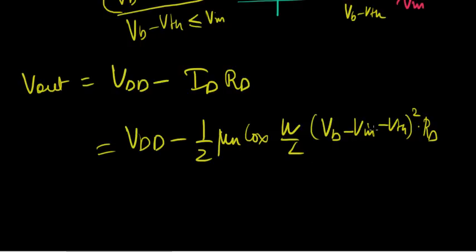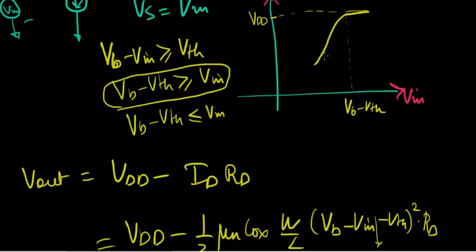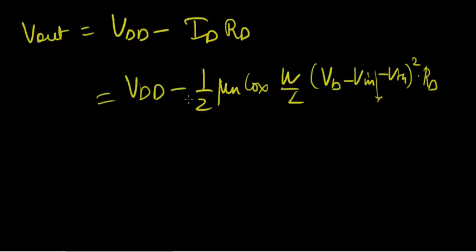Vout is Vdd minus IdRd. Vdd minus half mu n Cox w over L, Vb minus Vin minus Vth, the whole square times Rd. Is it clear how I got there? Vgs minus Vth, the whole square times Rd. Pretty simple, not a big deal. Now look at this. As Vin reduces, it was at a very large value before. As it reduces, this term basically increases. That means Id increases. As Id increases, Vout has to decrease. Considering obviously Vdd is always going to be greater than this IdRd drop, Vout will never go to zero, but it'll definitely reduce and then go to some really small value and stay there. I did all this just to do the output characteristics.